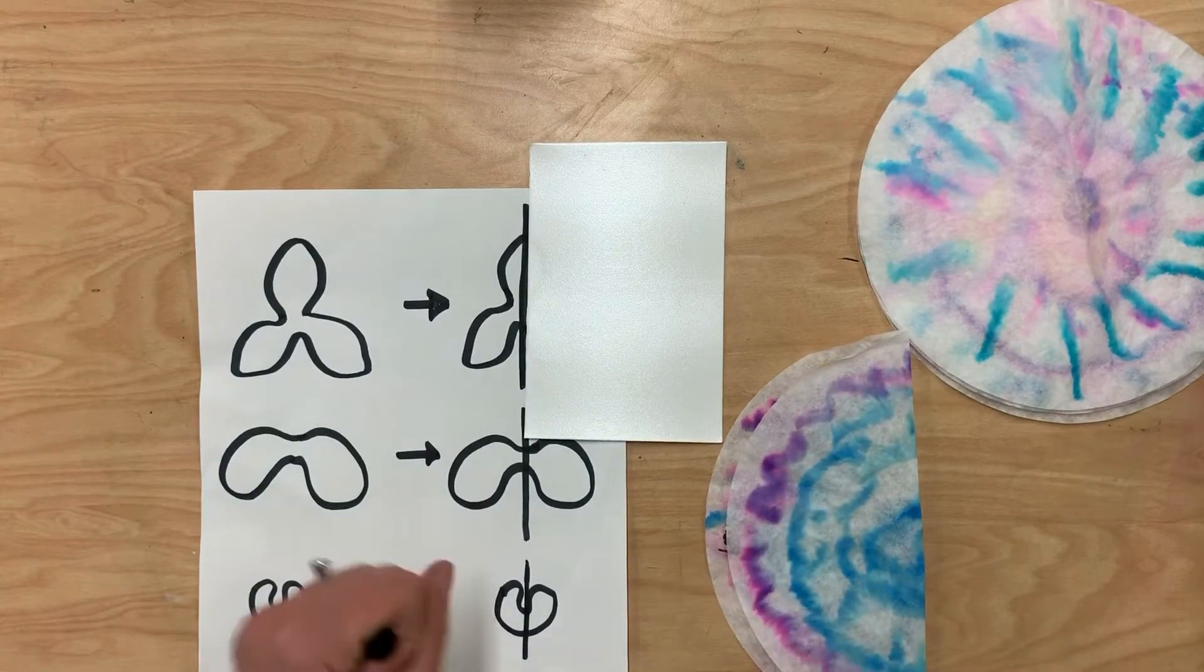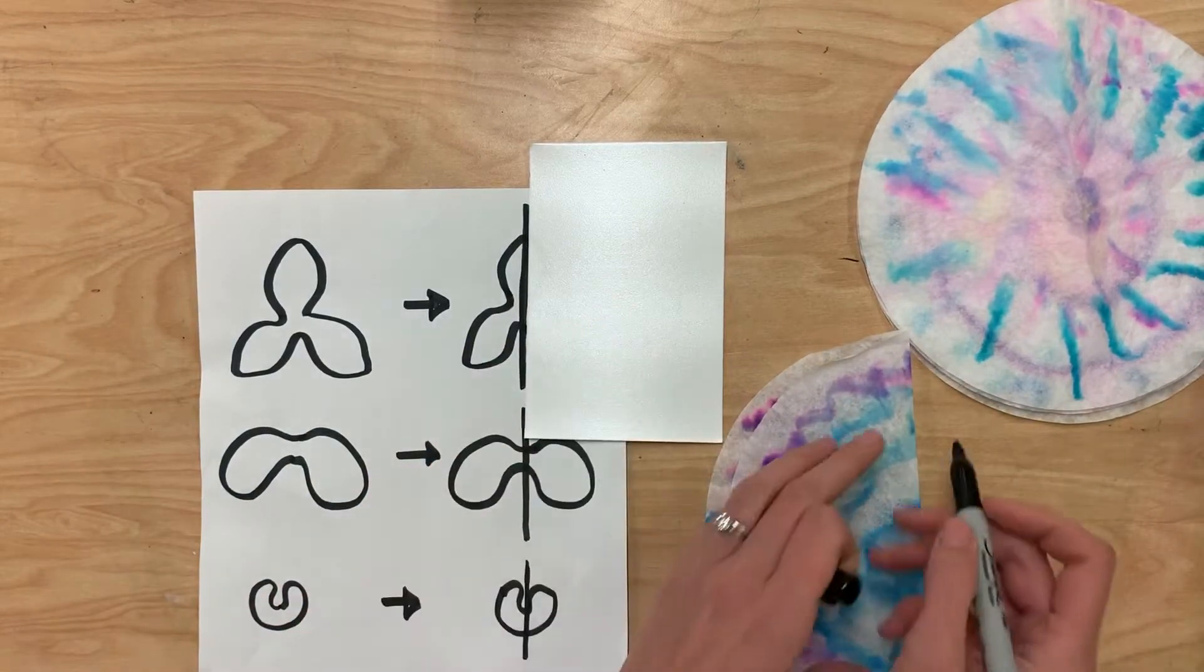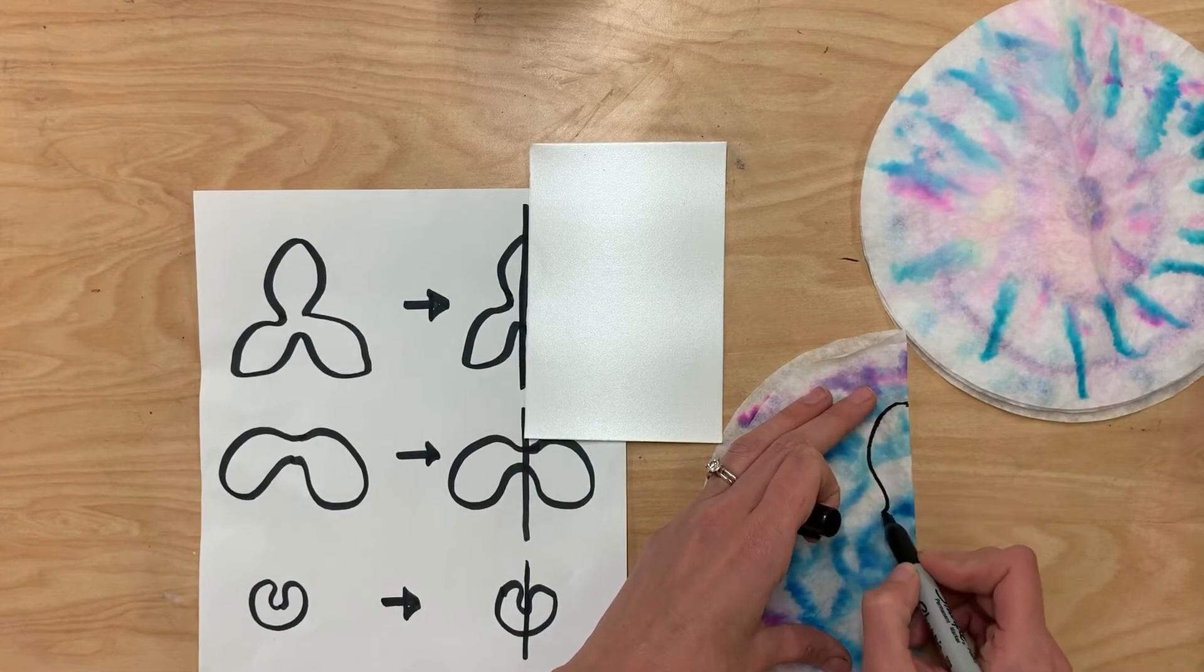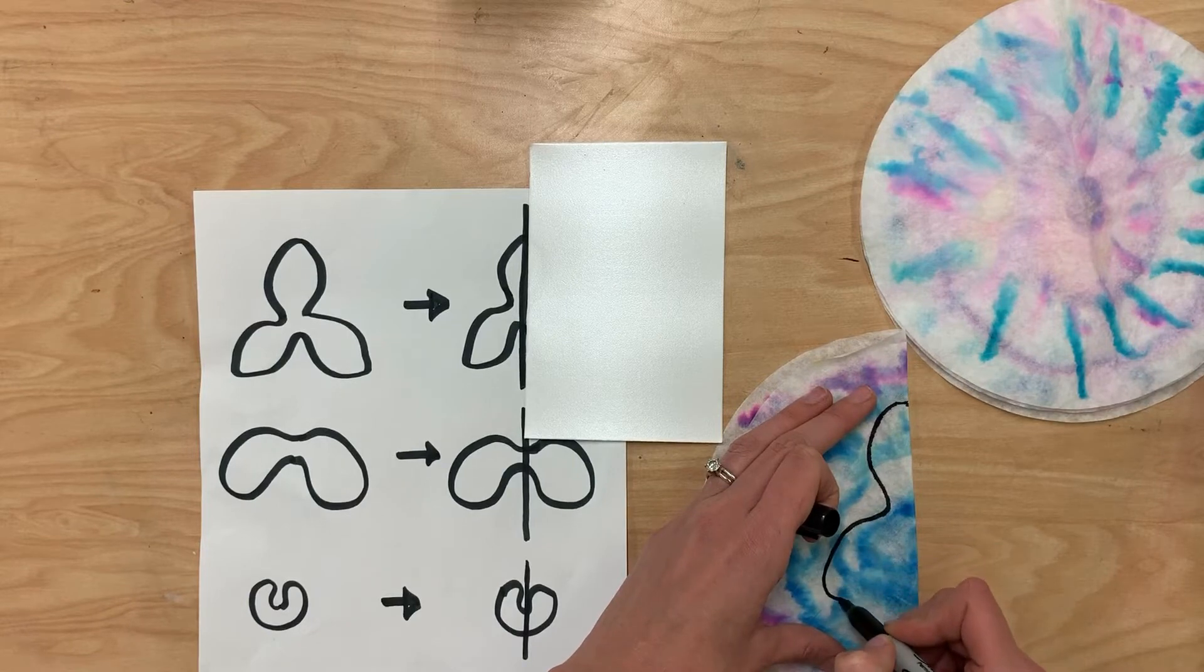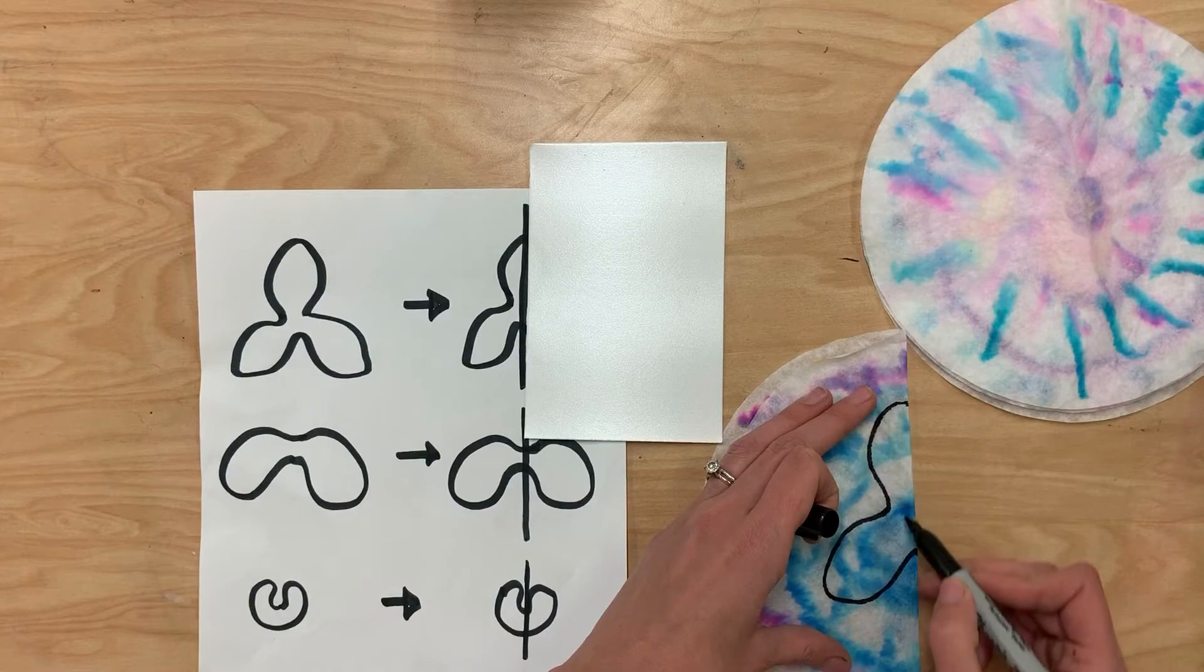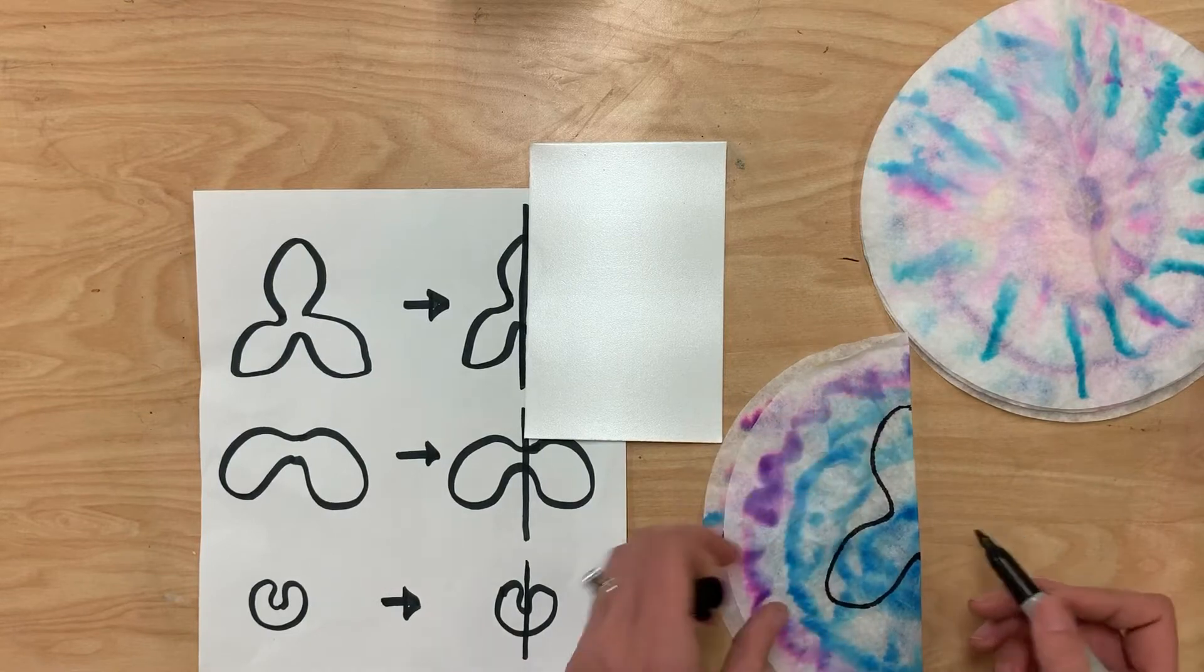On the fold, I'm going to draw this same design that I see here. And depending on how big you make it will be how big your orchid will be. So I'm only doing the half of it like this. And then when I cut it out, I'm going to have something that looks like an orchid.